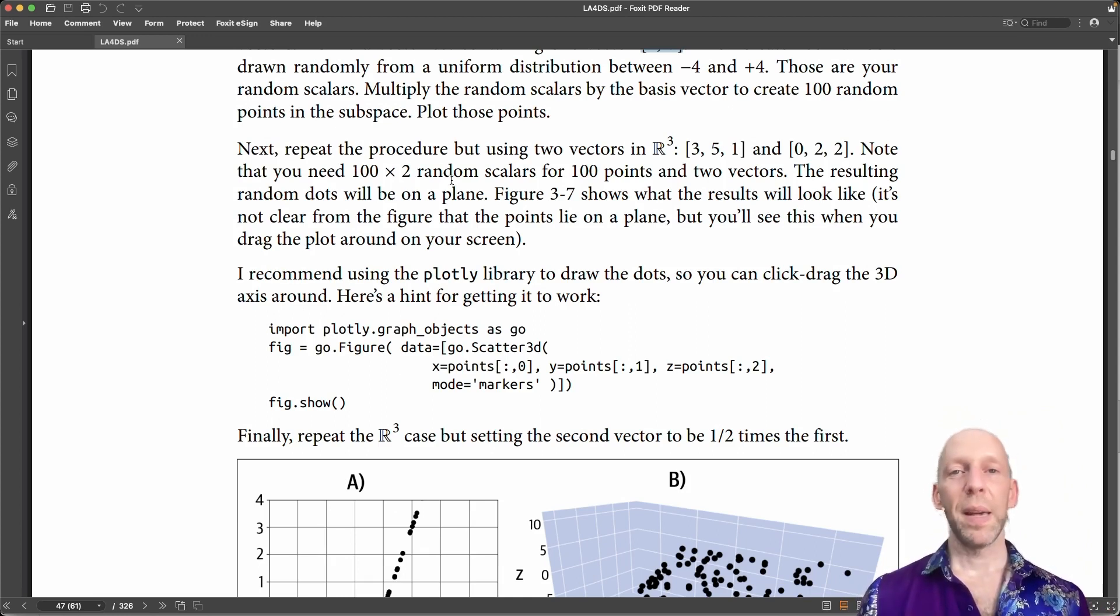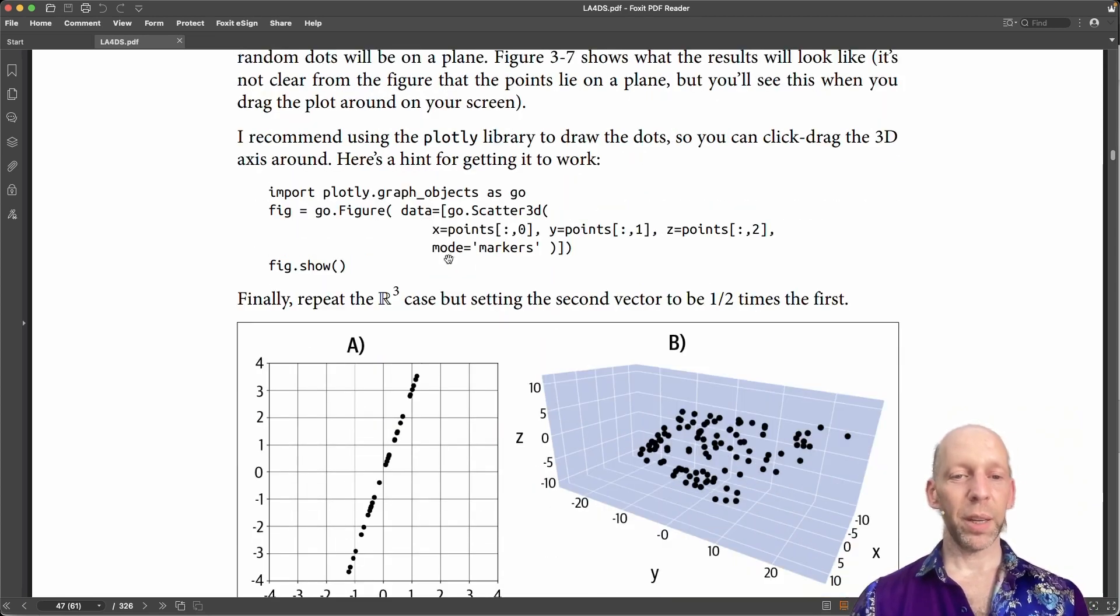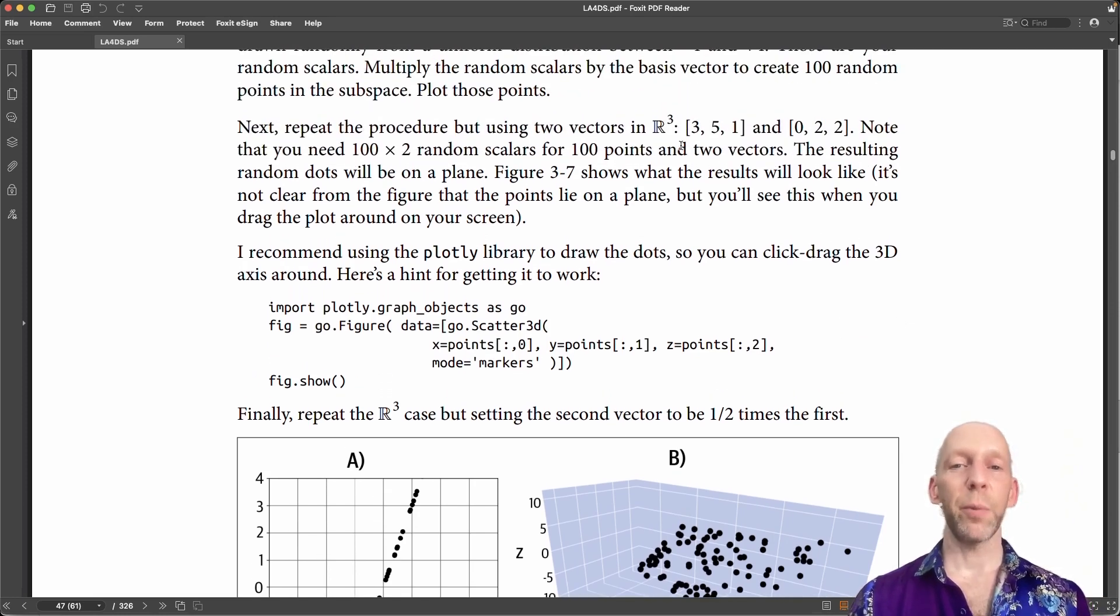But we are moving up in dimensionality. So instead of working with a two dimensional plane, we are going to work with a three dimensional space. And instead of just having one vector in 2D, we're going to have two vectors in 3D. And these are the two vectors.